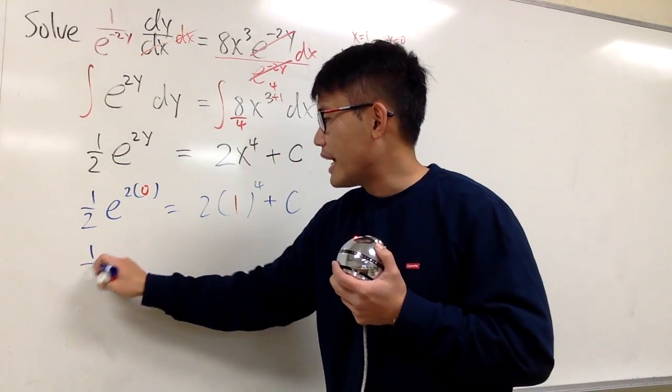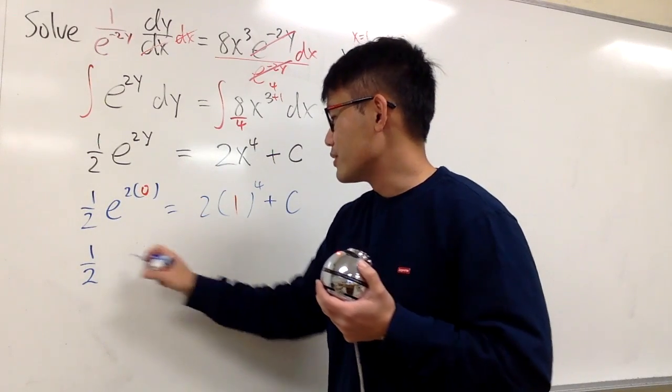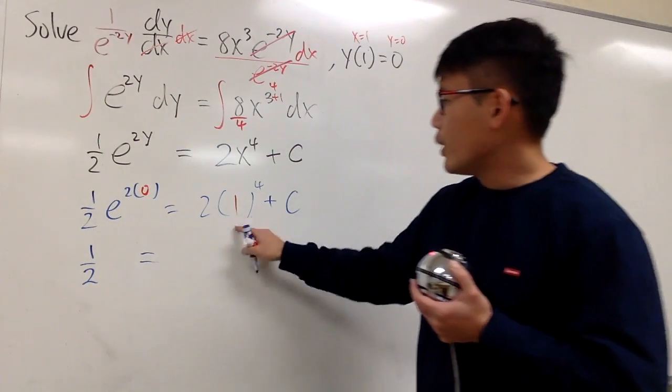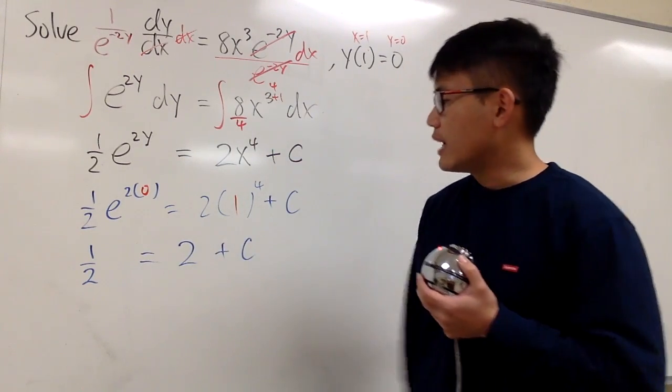Right. Right here, this is 1 half. And e to the 0th power, right? 2 times 0 is 0. It's just 1. So it's just 1 half. And 1 to the 4th power is 1. Times 2 is just 2. And we add a c to that.